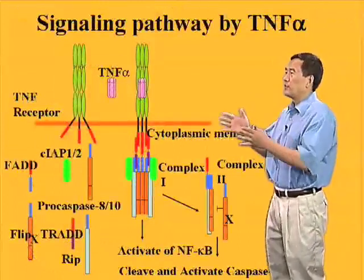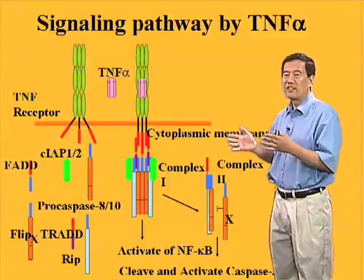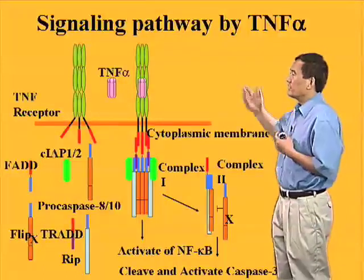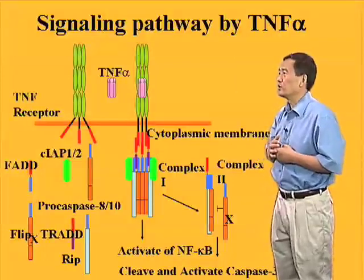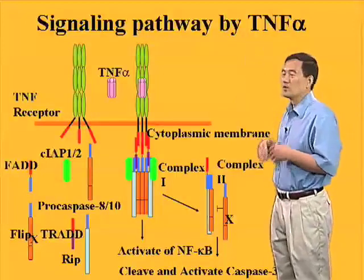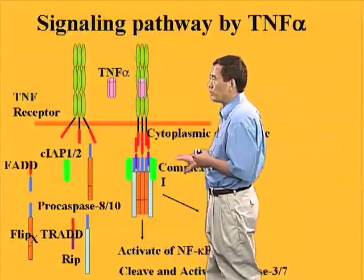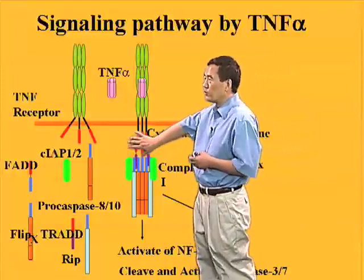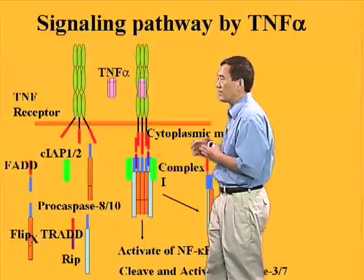The previous slide showed the pathway caused by CD95, which is relatively simple. Another important death-inducing cytokine is tumor necrosis factor alpha, TNF-alpha. The signal transduction pathway of TNF-alpha is more complex in that, in addition to forming a caspase-8 activation complex, it is also able to form a signaling complex that activates NF-κB.